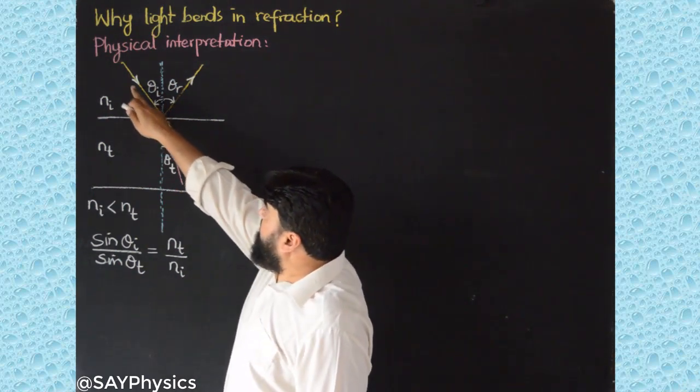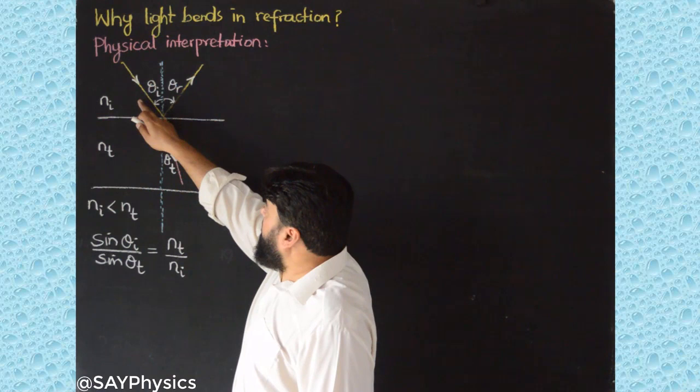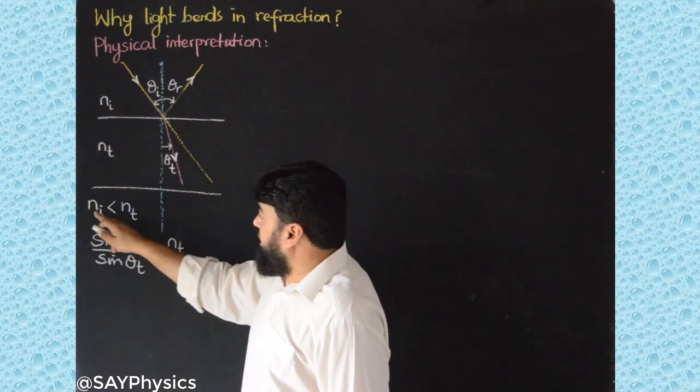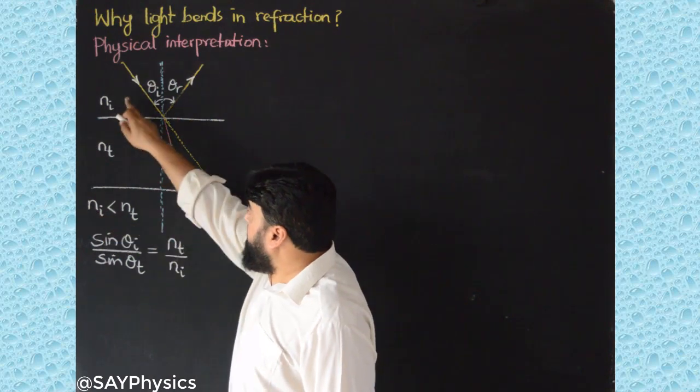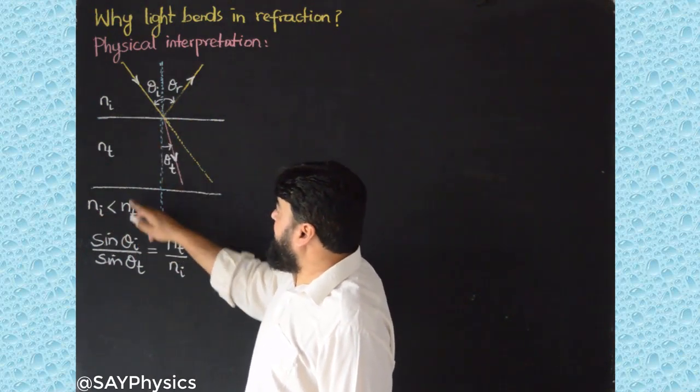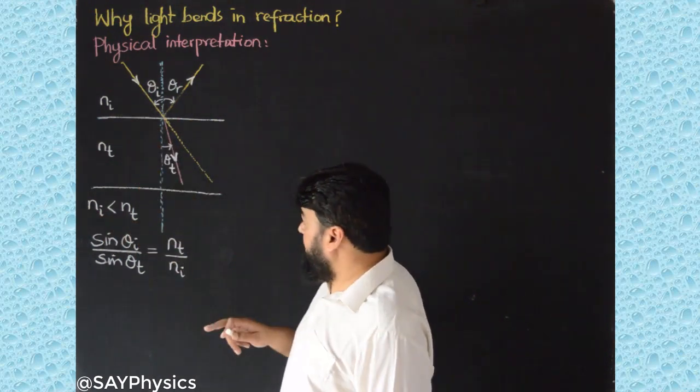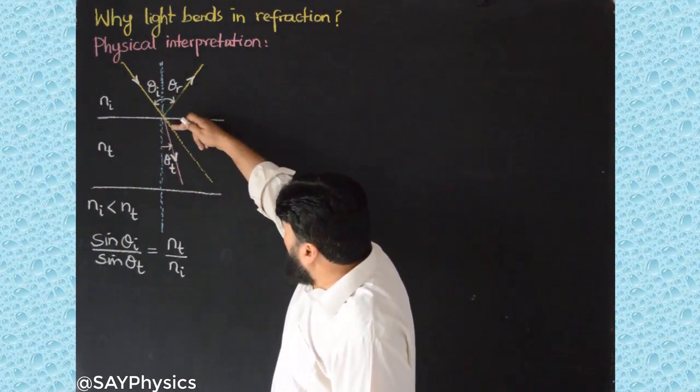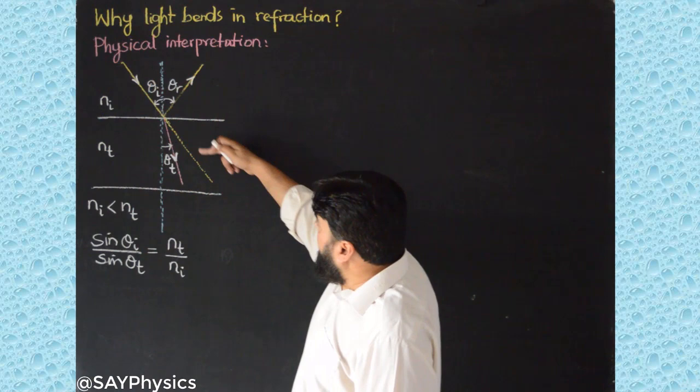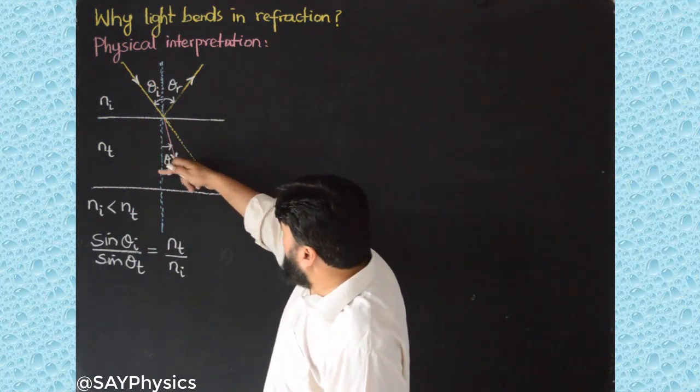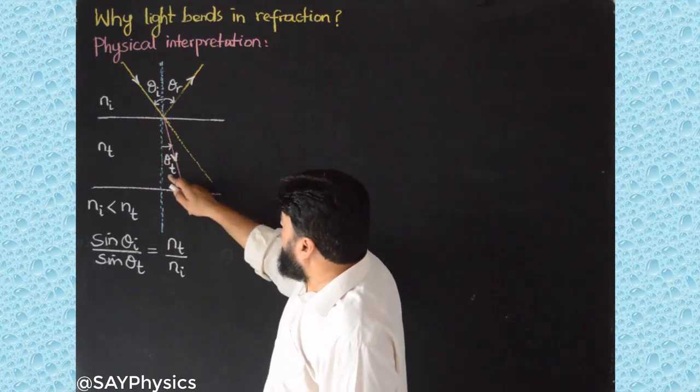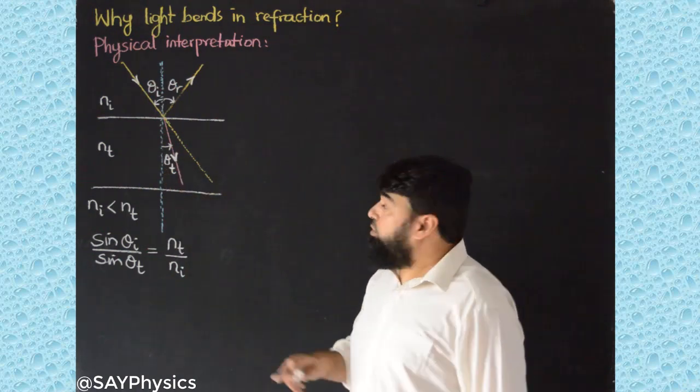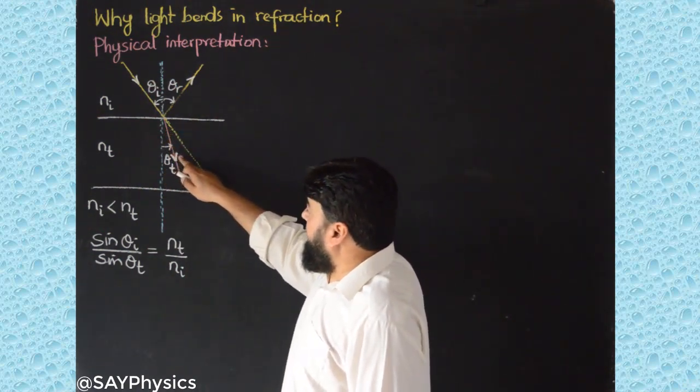If I look at this diagram, then light is incident from a rarer medium into a dense medium such that the refractive index of this medium is less than the refractive index of this medium. The light was supposed to follow this path but it actually bends towards the normal and the angle of bending is theta_t. Why does this light bend actually?